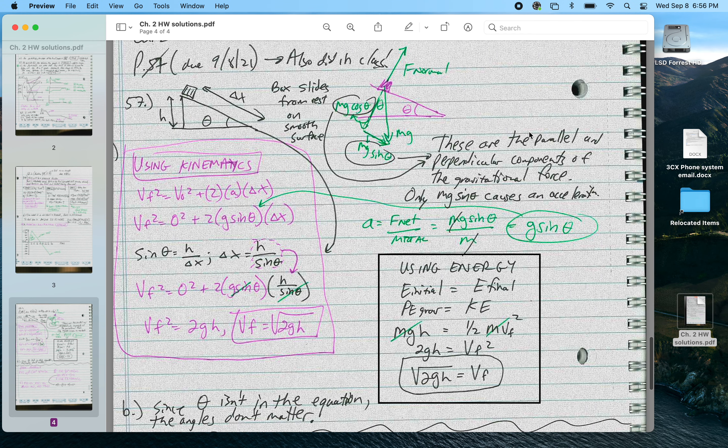For 57, I solved it two ways. I did this as an example problem. This is using kinematics, this is using energy. This is the initial diagram. You wanted your answer only in terms of h and theta, so I just happened to put delta x there, and I had to solve for delta x in terms of h and theta.